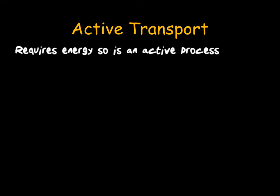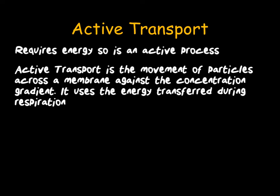The final type of cell transport we need to know is active transport. Active transport differs from diffusion and osmosis because it requires energy, making it an active process. The reason it requires energy is that it goes against the concentration gradient — so active transport is the movement of particles across a membrane against the concentration gradient, from an area of lower concentration to an area of higher concentration. It does this by using the energy transferred during respiration. Active transport is very useful to our body, used during digestion and during filtration of the blood, where glucose is moved back into the blood against its concentration gradient using carrier proteins.